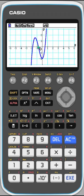And there's our graph. And now let's say we want to find the integral between this value here and like this negative 0.8. So we're going to look for the integral functionality. And that lives in G solve, which is above F5.